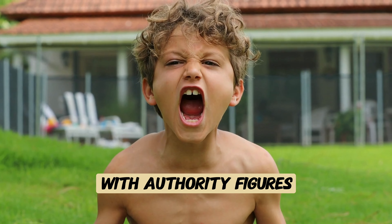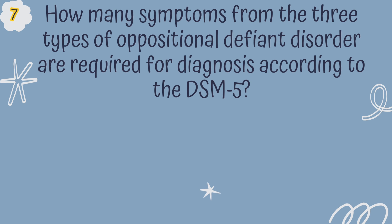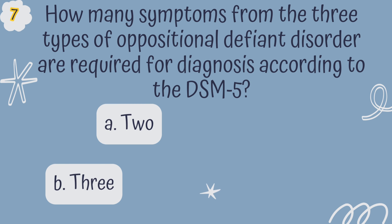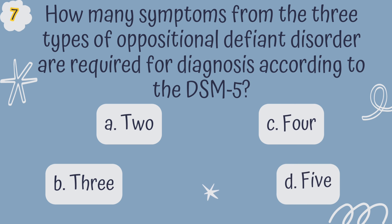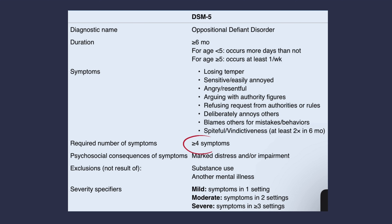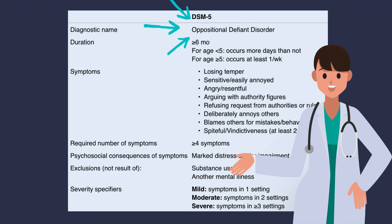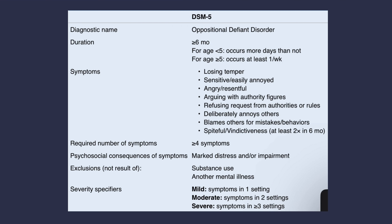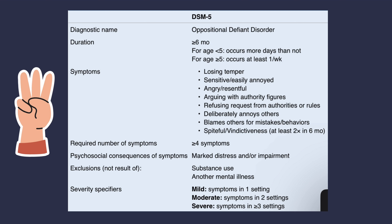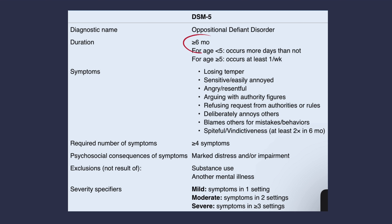Question 7. How many symptoms from the three types of oppositional defiant disorder are required for diagnosing according to the DSM-5? A. 2, B. 3, C. 4, or D. 5? The correct answer is C, 4. For a diagnosis of ODD, a child needs to display a consistent pattern of at least four symptoms from the three types — angry/irritable mood, argumentative/defiant behavior, and vindictiveness — over a period of at least six months.